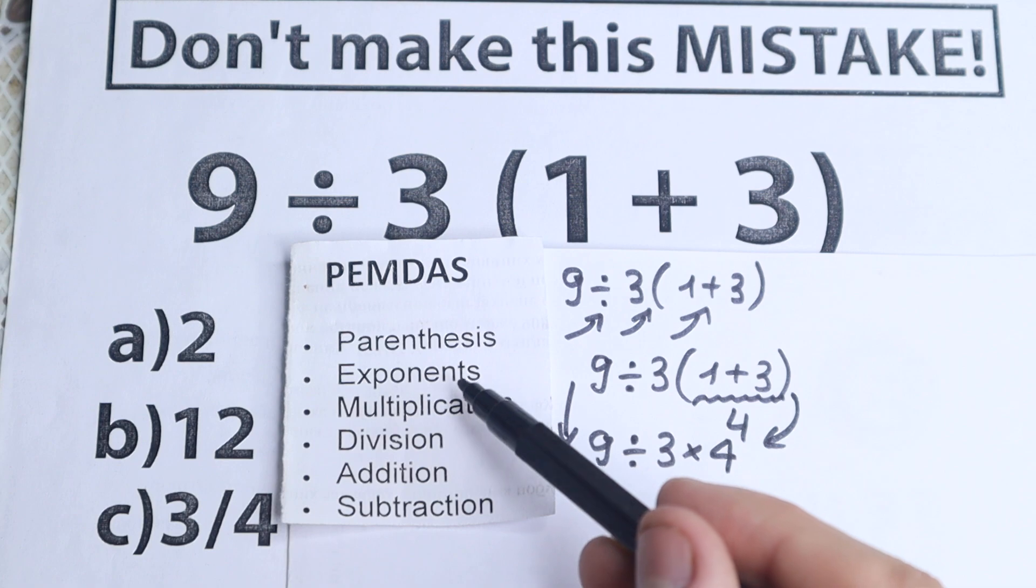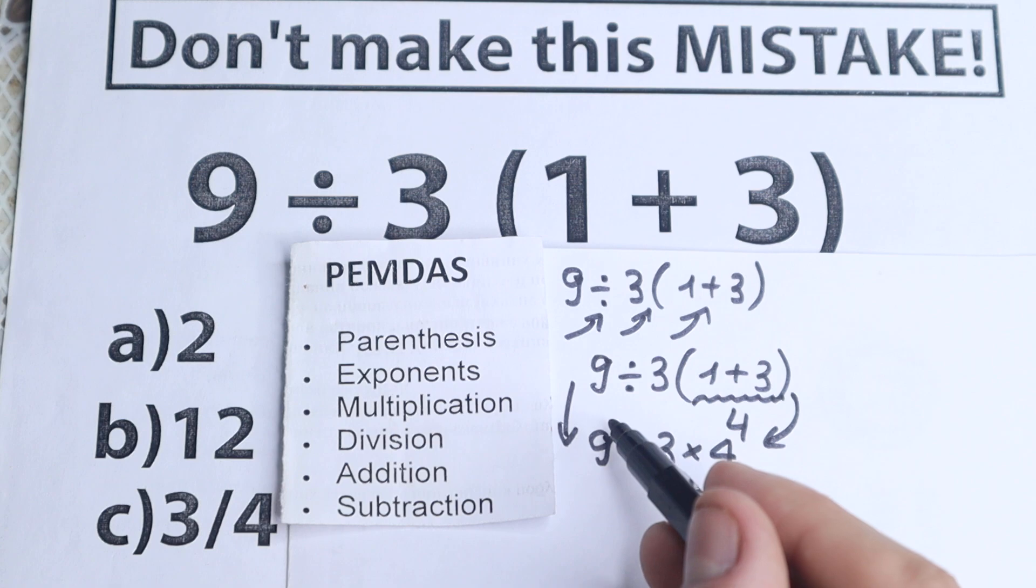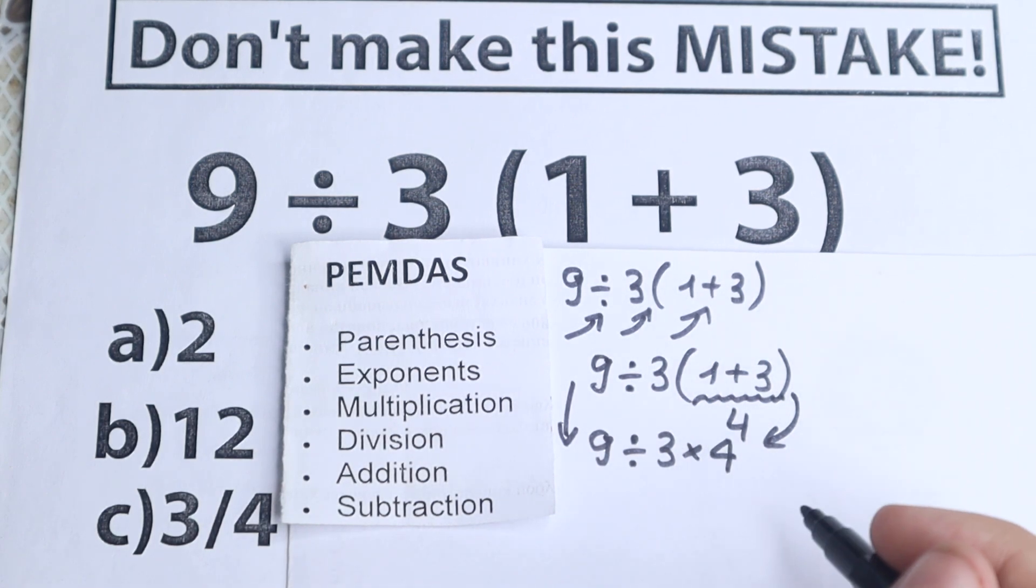The next step is exponents. Are there any exponents right here? No, I don't see any. We don't have any exponents, squares, or cubes. We have only regular numbers like 9, 3, and 4, which is really great.